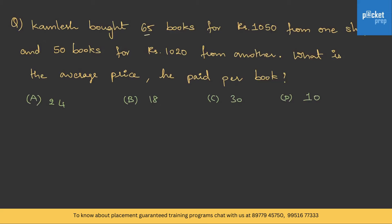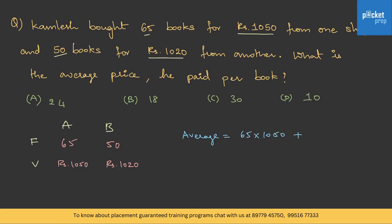Question: Kamlesh bought 65 books at rupees 1050 from one shop and 50 books at rupees 1020 from another. What is the average price per book? Using the weighted average formula: (65×1050 + 50×1020) / (65 + 50) = (68250 + 51000) / 115 = 119250 / 115, giving approximately 1037 rupees. Therefore option B.